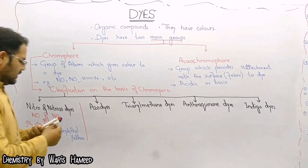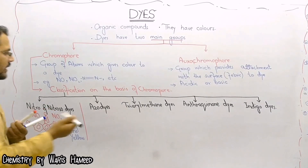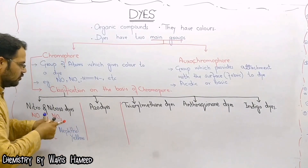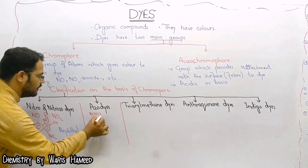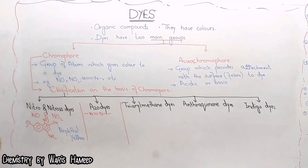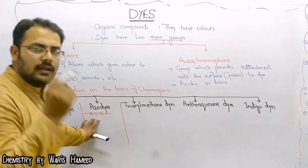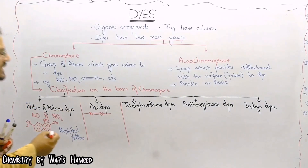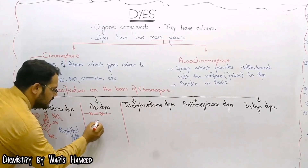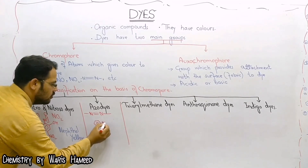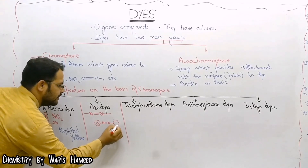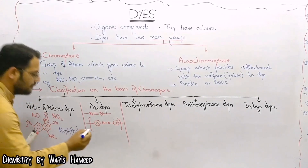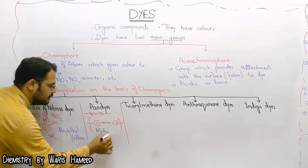In the case of azo dyes, the chromophore is nitrogen double bond nitrogen (N=N). Nitrogen double bond nitrogen is the chromophore group. In this case we have a nitrogen atom bonding with another nitrogen atom with a double bond. Its example is methyl orange — a benzene ring connecting with two nitrogen atoms and another benzene ring, and here is the azo bond. It is methyl orange.